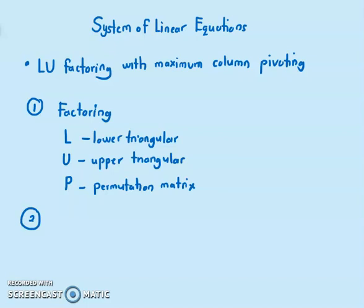The second step we want to do is we need to find LY equals to PB. Of course, B is the vector that occurs from the system of equation. P is the permutation matrix, L is the lower triangular, and Y is the equation we want to obtain using forward substitution.